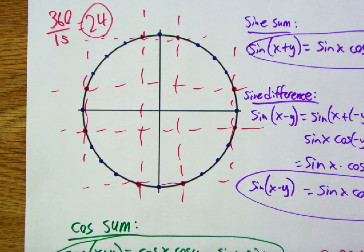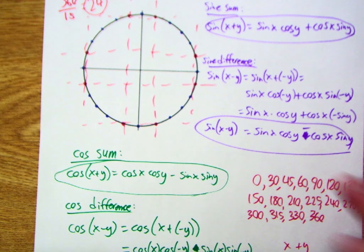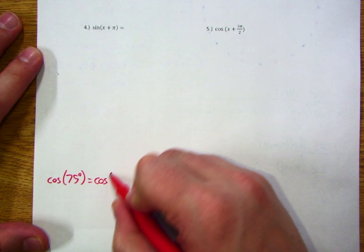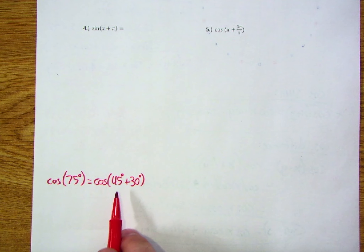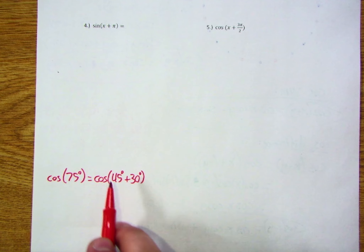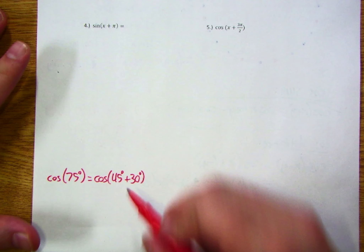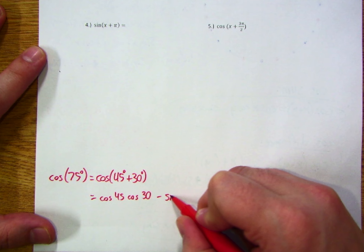Let me give you one quick example. What is the cosine of 75 degrees? We don't know that innately, but we can call this the cosine of 45 plus 30 degrees — those are equivalent. By rewriting it this way, I've created two familiar angle measures out of one unfamiliar one. Using our cosine sum formula: cosine of 45 plus 30 equals cosine 45 times cosine 30 minus sine 45 times sine 30.